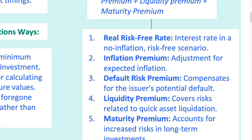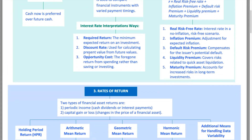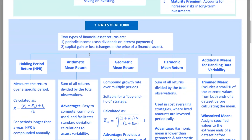Number five is the maturity premium. Long-term investments carry more risk because the future is uncertain, and the maturity premium compensates for this added risk. A 30-year bond typically offers a higher yield than a five-year bond to make up for the increased risk. Next up, let's dig into the various rates of return — knowing how to measure and interpret returns is key to making smart investment decisions.